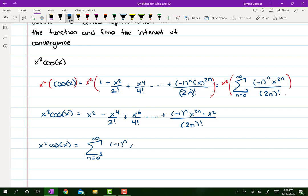So then x squared cosine of x is equal to negative 1 to the n, x to the power of 2n plus 2, divided by 2n factorial. And the interval of convergence for a trig function is all real x's.